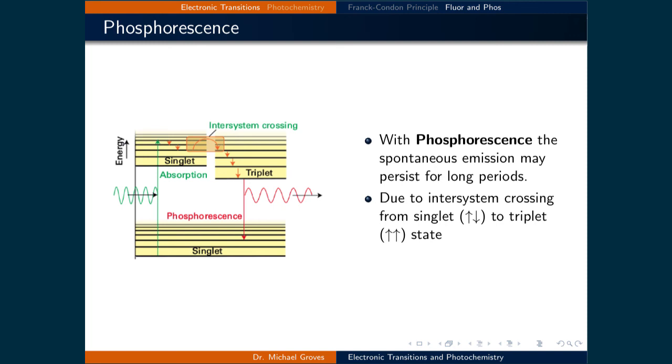The inter-system crossing is represented here as a spin flip of one of the electrons between, say, a singlet to a triplet. This is an uncommon event, so relaxation times are longer.